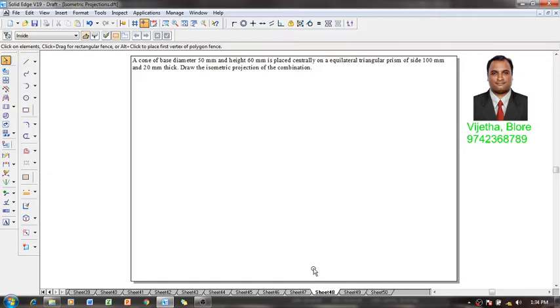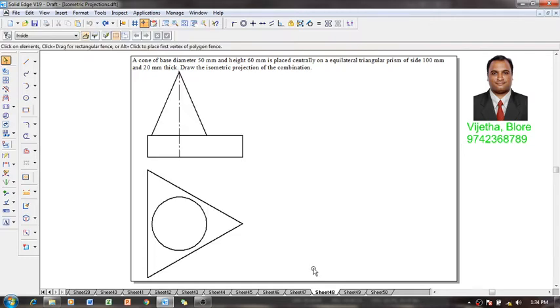According to the given condition, we have to position a cone at the center of the triangular prism. The required orthographic projection is going to be obtained like this. Now when we see at the bottom we have an equilateral triangular prism of 100 millimeter side.